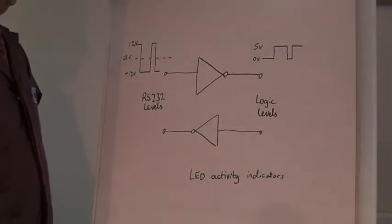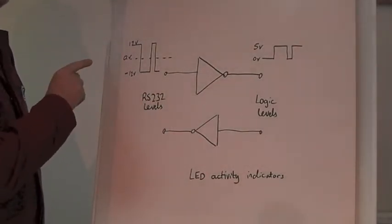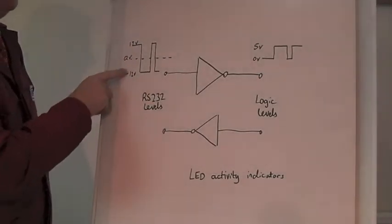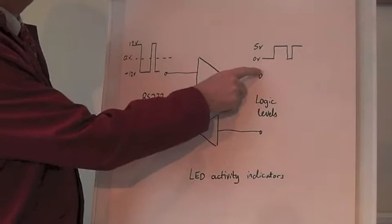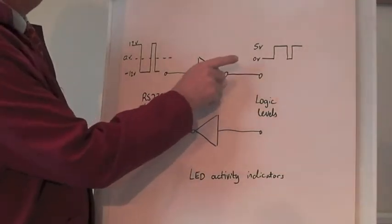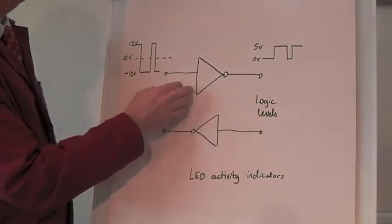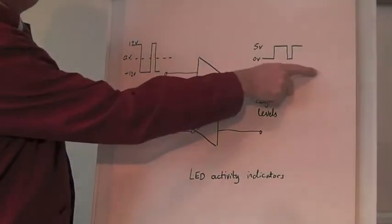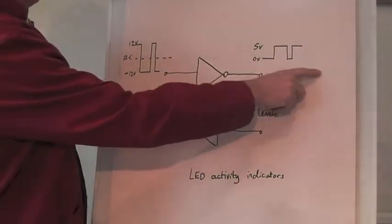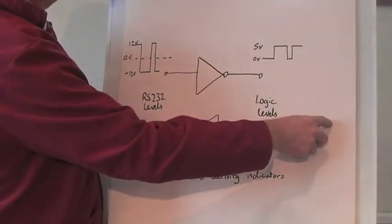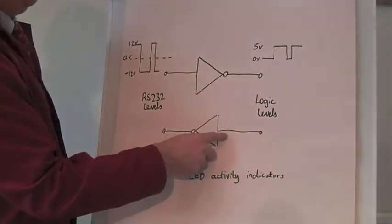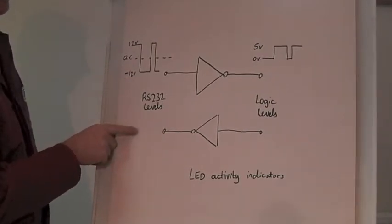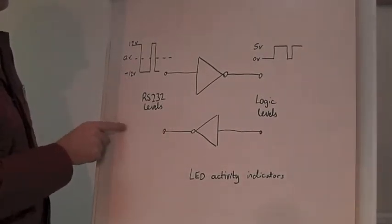So what we do with the level shifter is we take RS232 levels on the inputs. We take plus 12V, minus 12V, which is what RS232 is, swinging around 0V. And we level shift it to logic levels which is 0 to 5V or 0 to 3.3V depending on the system. So we transmit RS232 and receive in our target logic levels. And our target transmits logic levels and the converter converts it to RS232 levels.